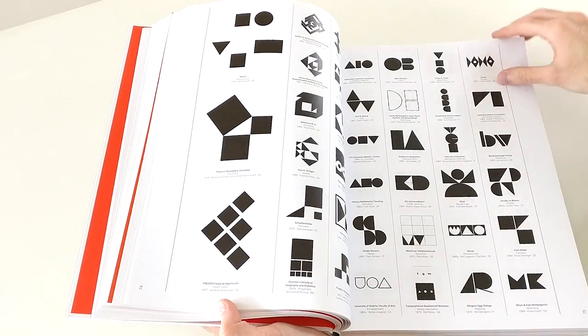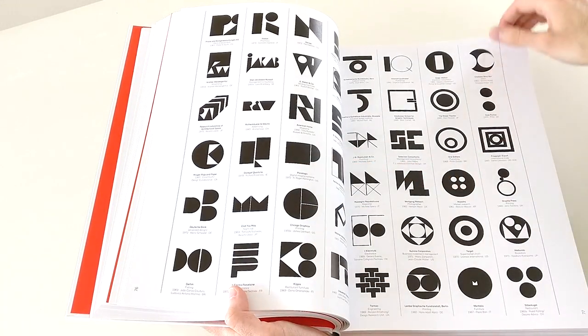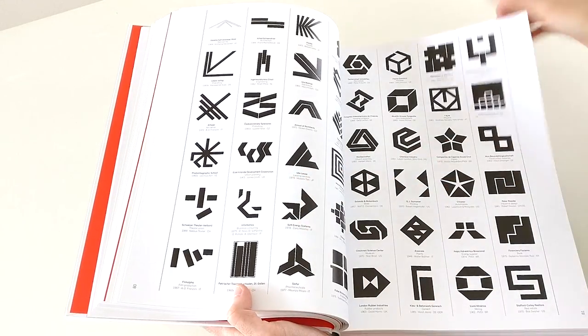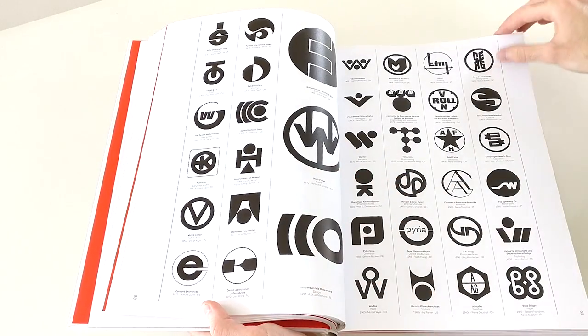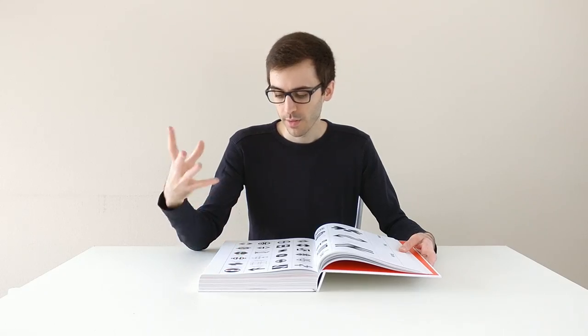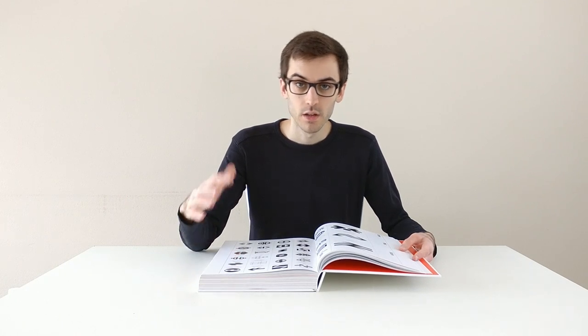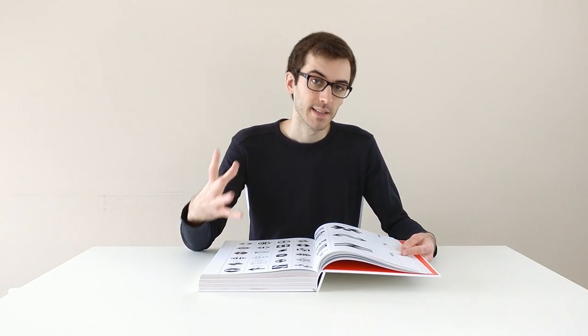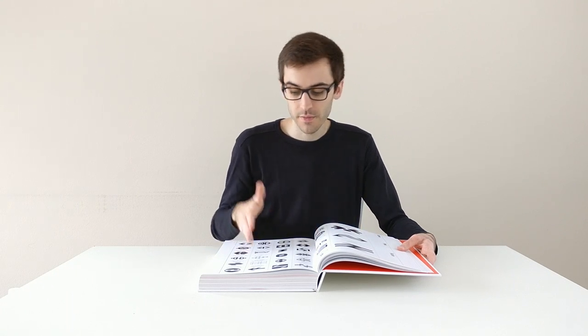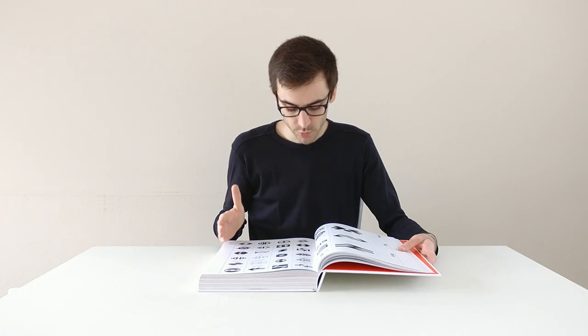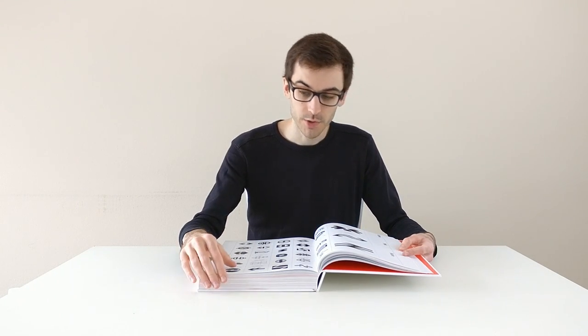As you can see when I go through the book, every logo is ordered in a certain way, so it's also very good if you're looking for a certain type of logo. For example, if you know 'I want to make a logo that consists of arrows,' you can look it up and here you have only inspiration on logos containing arrows.